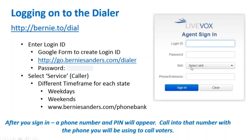You can always log into the dialer at bernie.to/dial. Enter your login ID and password. For service, select a state caller service — for example, Iowa Caller. After you sign in, a phone number and pin number will appear.